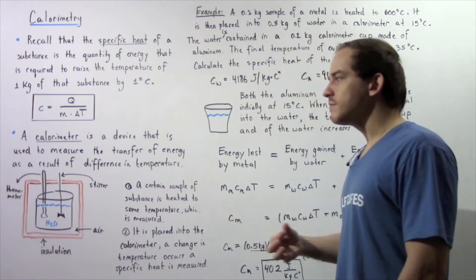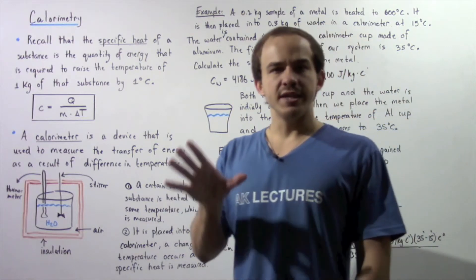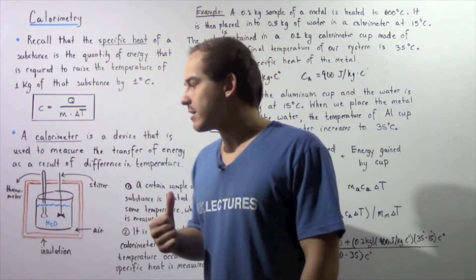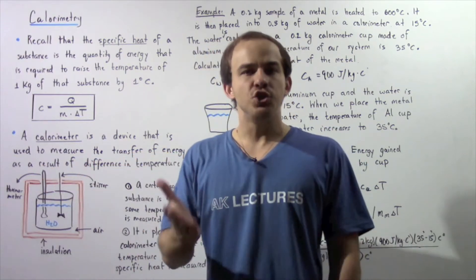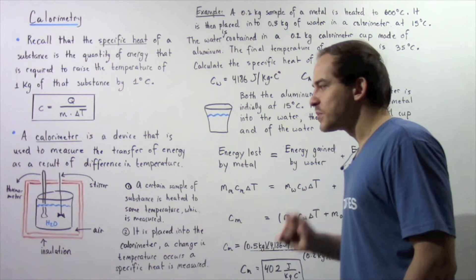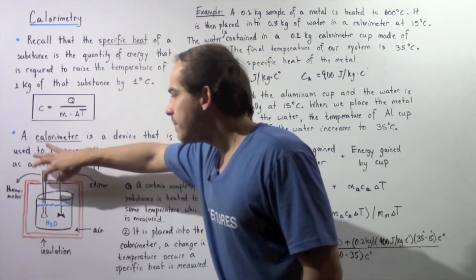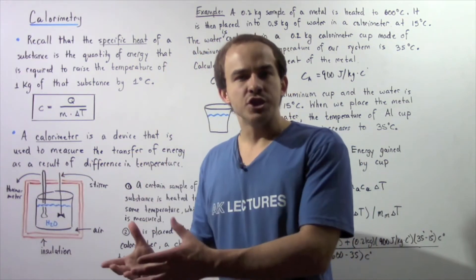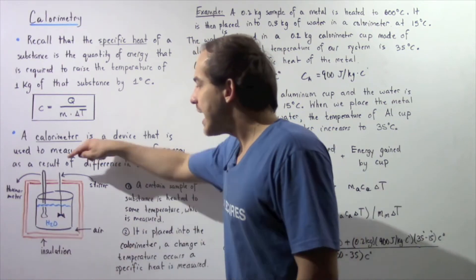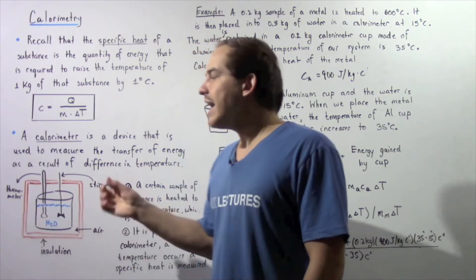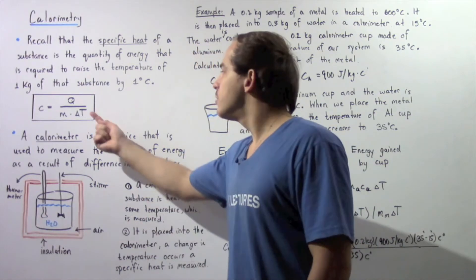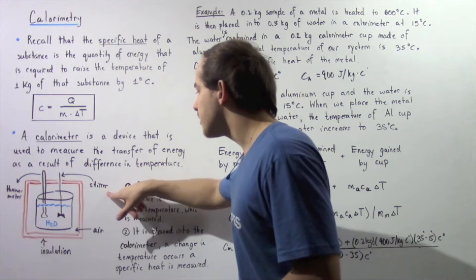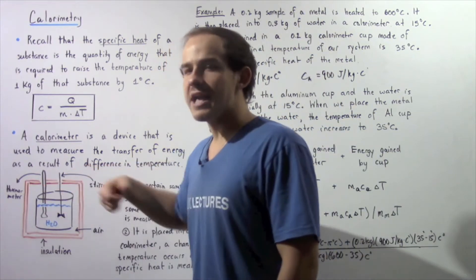There are different types of calorimeters, but generally it looks something like this. We have a cup, usually made from some metal, and inside the cup we have a liquid — usually water — whose specific heat we know. The outer insulation layer keeps energy from escaping the cup. A thermometer is placed into the liquid to measure the change in temperature of the system, and a stirrer is used to homogenize the mixture.